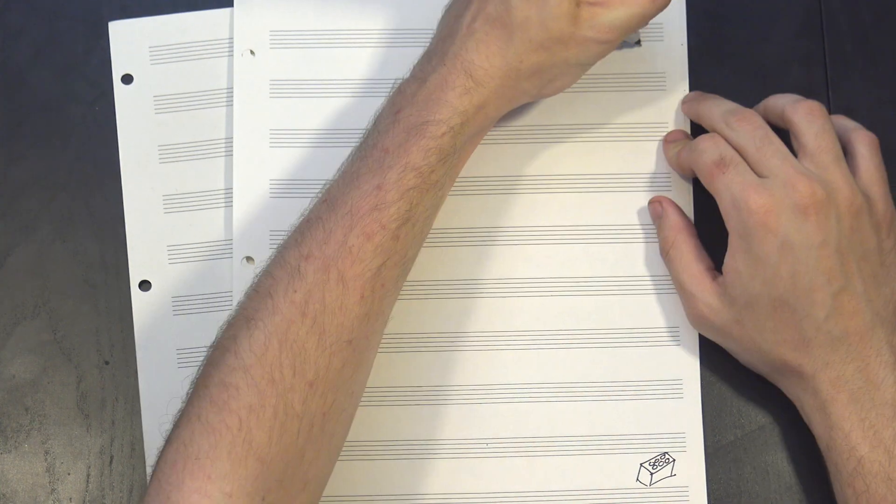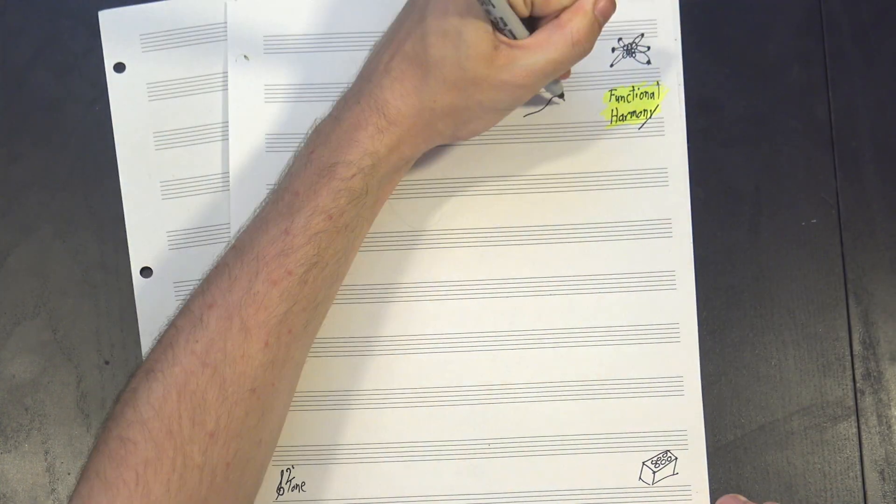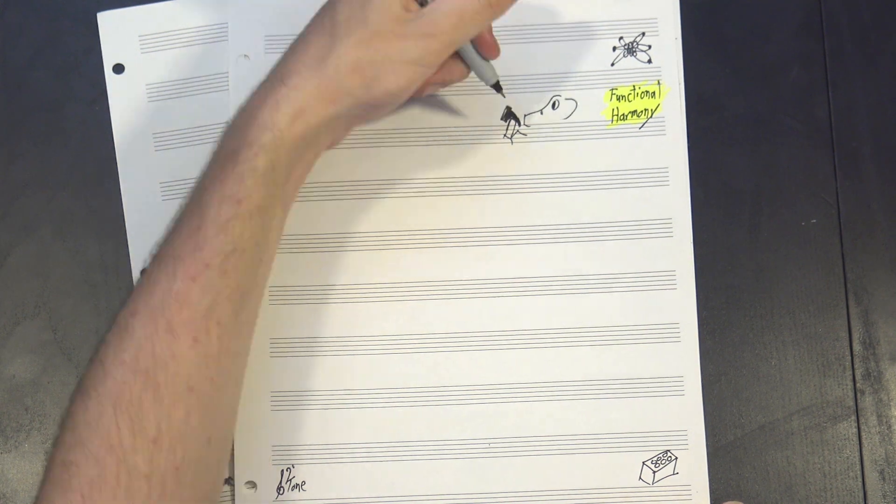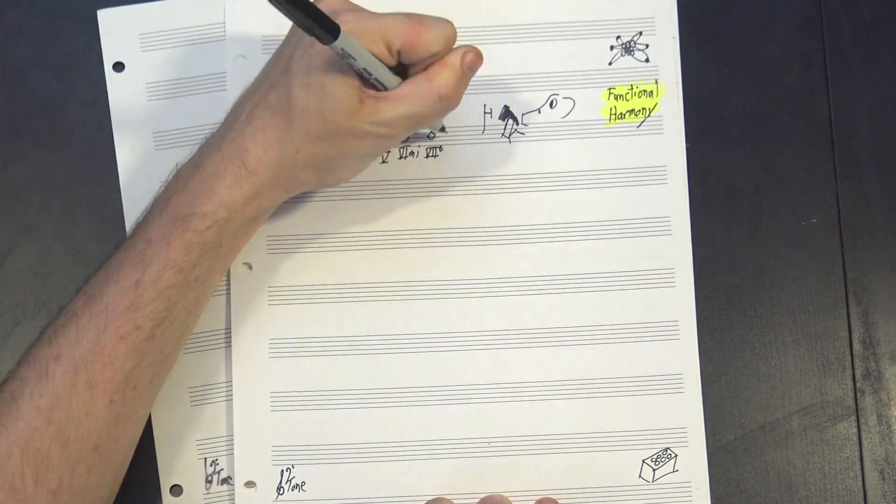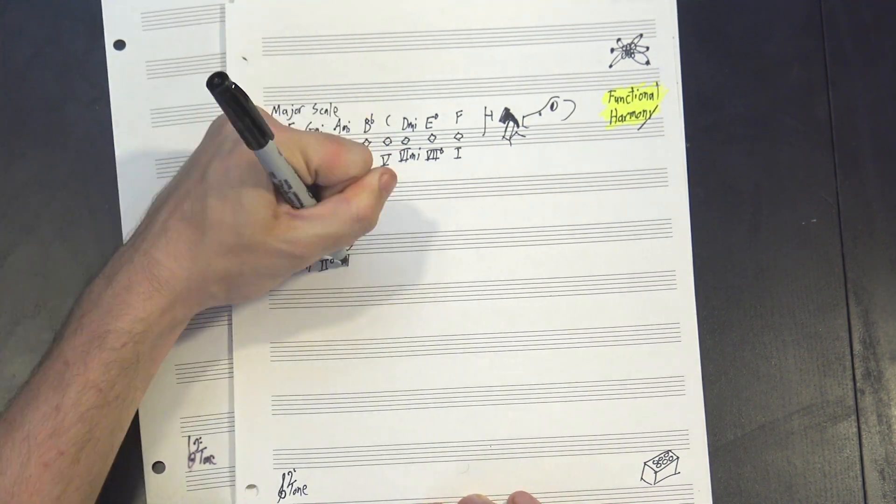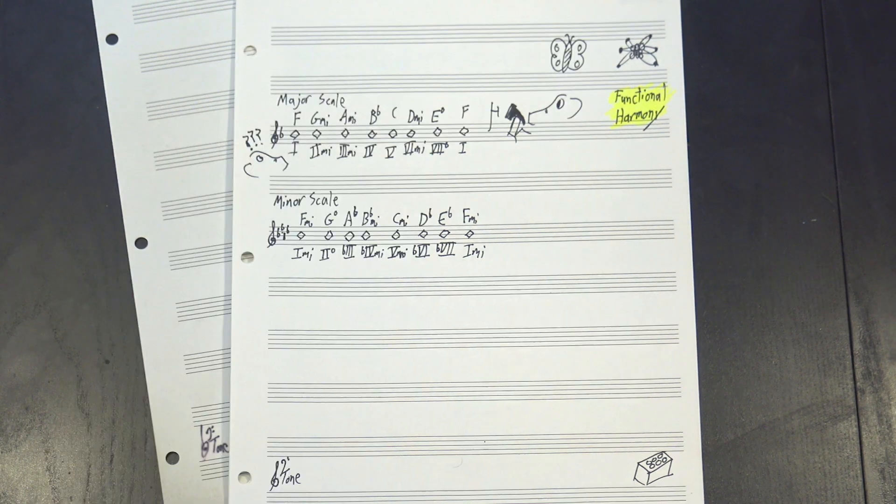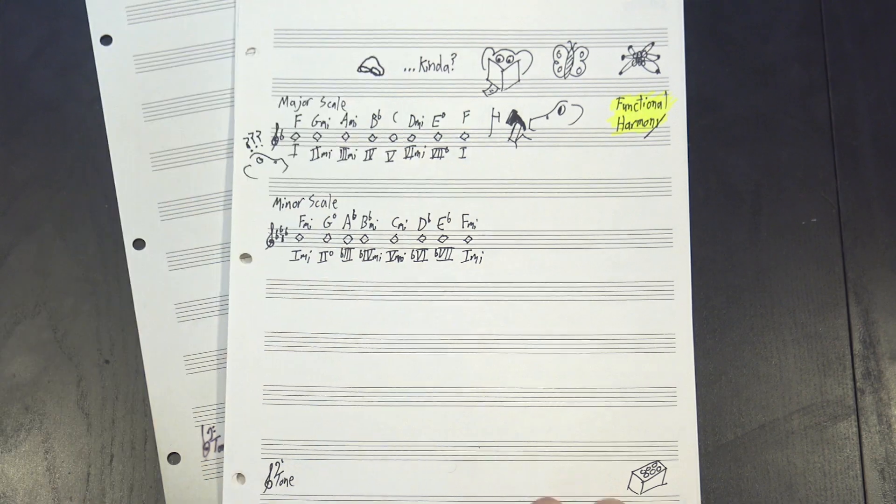Hey, welcome to 12-tone Building Blocks, our monthly series about the fundamentals of music theory. We've been talking a lot about functional harmony, the idea that different chords in a key have different jobs to do, but so far we've only been talking about the major scale. A lot of you have been asking the same question: how does this work in minor? Does it even apply? It's a good question, and the short answer is… kinda? OK, that's not super helpful, so let's look at it a bit more in depth.